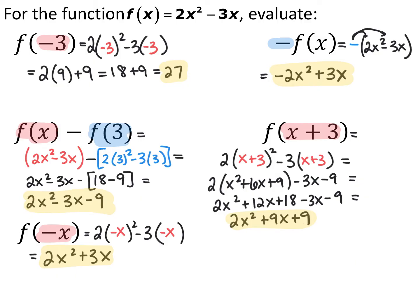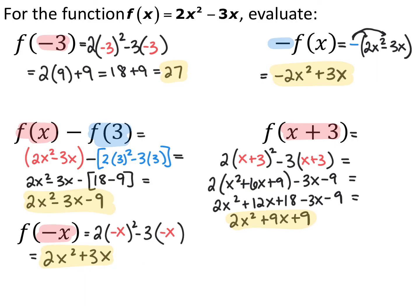For the last one, I replace every x in the original function with negative x, getting 2 times the quantity negative x squared minus 3 times negative x. Negative x quantity squared is just positive x squared, and negative 3 times negative x is positive 3x. Anytime you have something inside the function notation, you replace every x with that. Anytime you have something on the outside, it applies to the entire function.